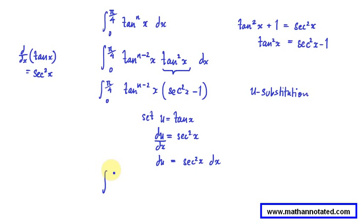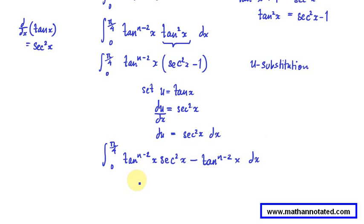That was in terms of x, and of course that means that du is equal to sec squared x dx. Following something I should have done before, we can expand that expression. That would be tan to the n minus 2 sec squared x minus tan to the n minus 2, simple expansion of the bracket in terms of x.